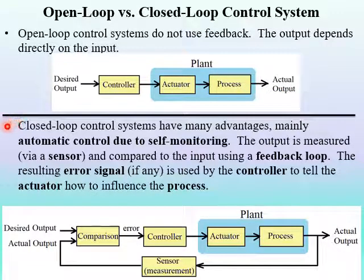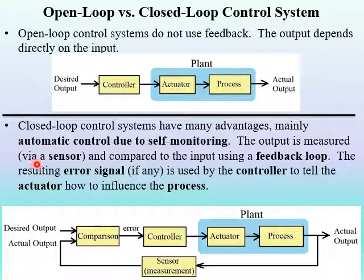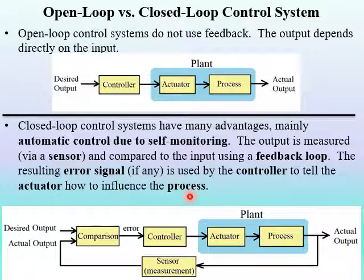A closed-loop system has many advantages over an open-loop system, mainly automatic control due to self-monitoring. The output is measured via a sensor and compared to the input using a feedback loop. The resulting error signal, if any, is used by the controller to tell the actuator how to influence the process.